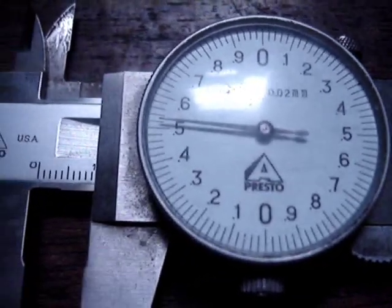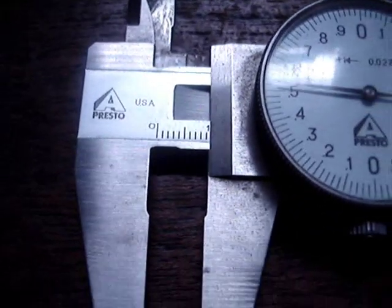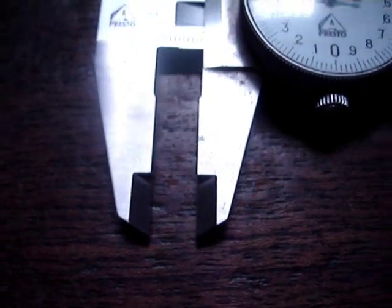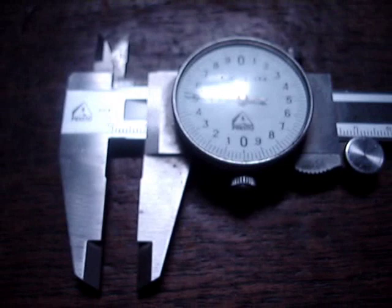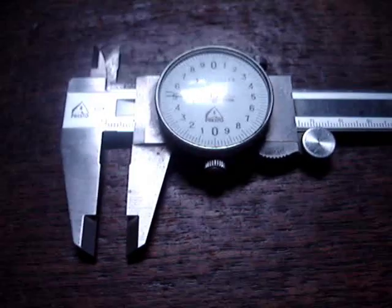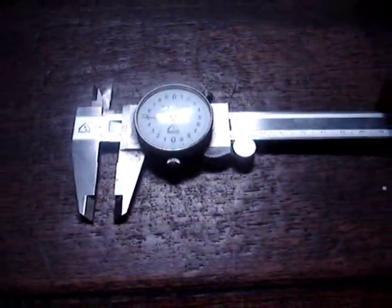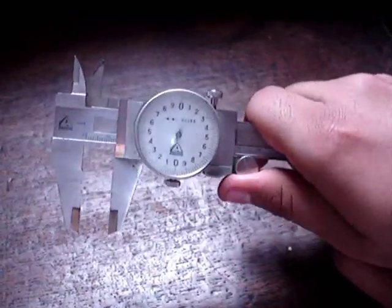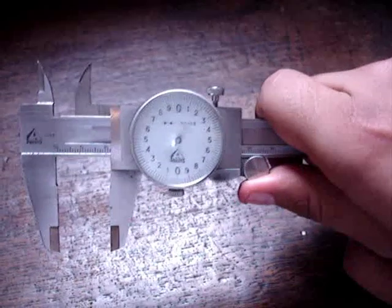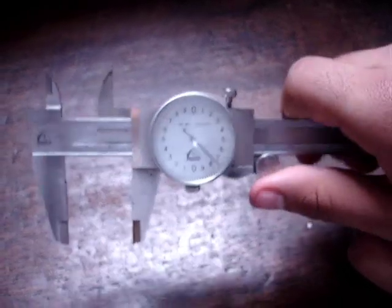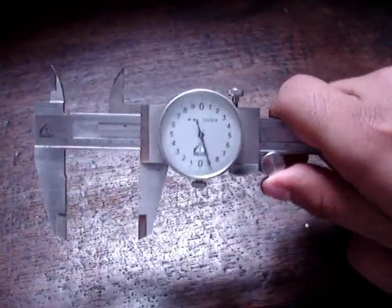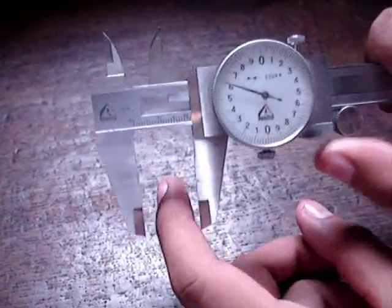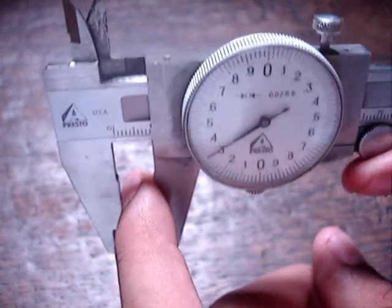Vernier calipers can measure internal dimensions using the uppermost jaws in the picture at right, external dimensions using the lower jaws, and in many cases depth by the use of a probe that is attached to the movable head and slides along the center of the body. This probe is slender and can get into deep grooves that may prove difficult for other measuring tools.